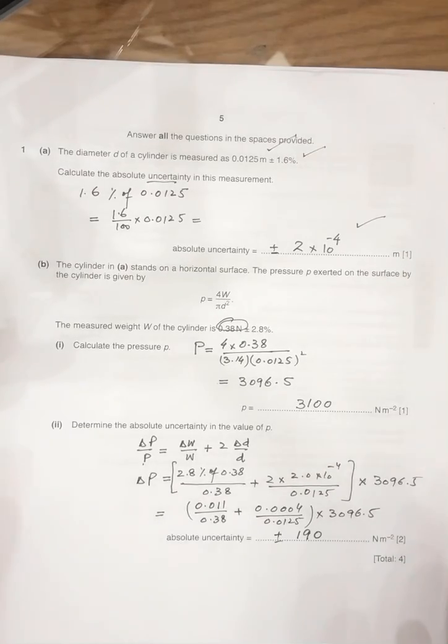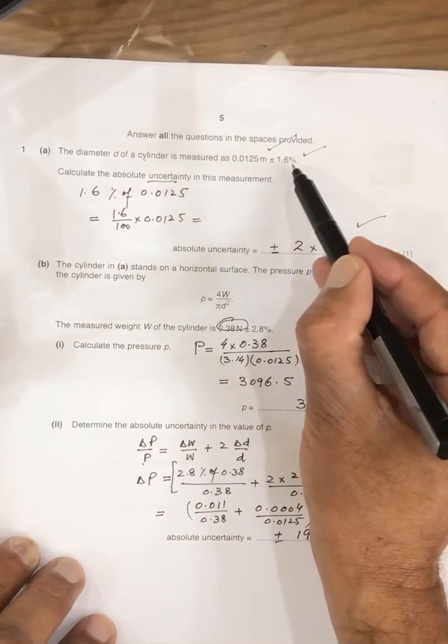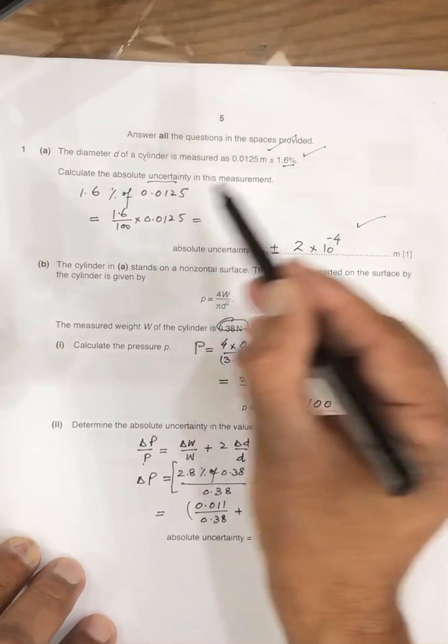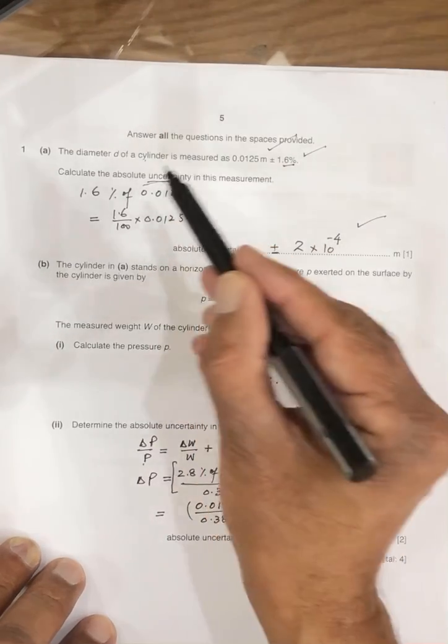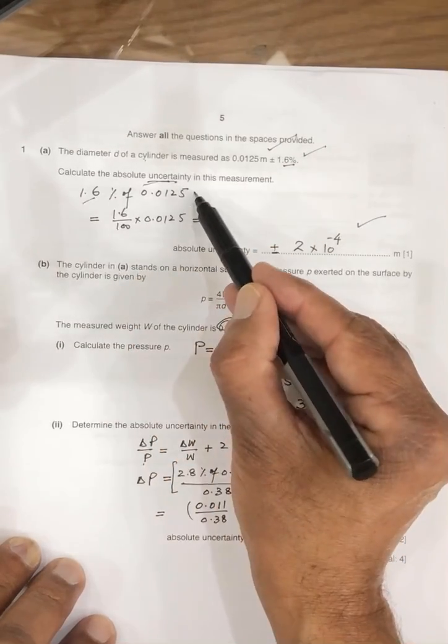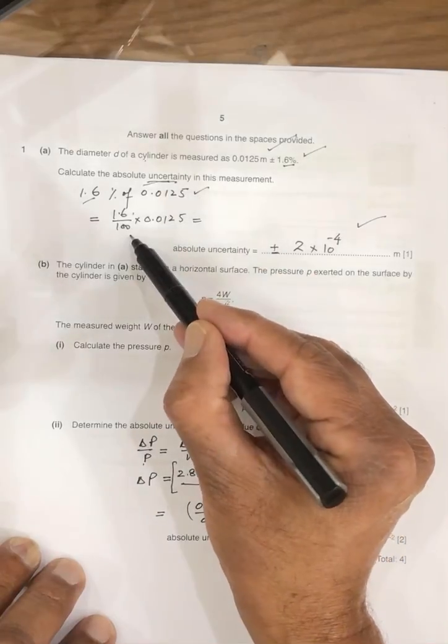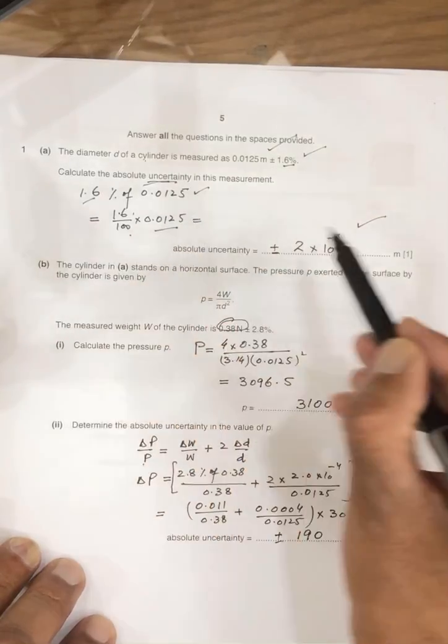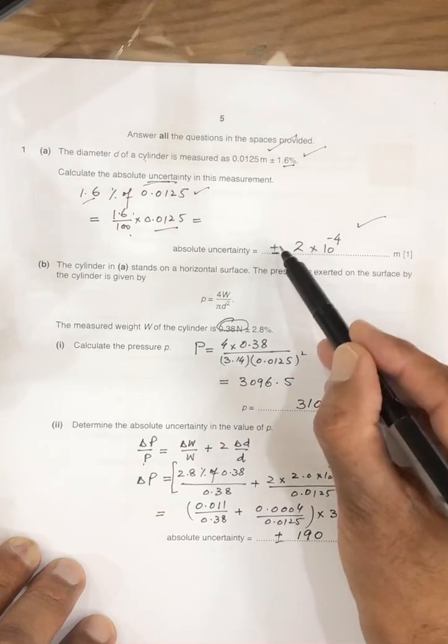Now, question number 1. Question is, diameter of the cylinder given with percentage uncertainty, we have to calculate absolute uncertainty. So 1.6% of the diameter, 1.6 divided by 100 into diameter value, so the answer is 2 into 10 to the power minus 4 plus minus.